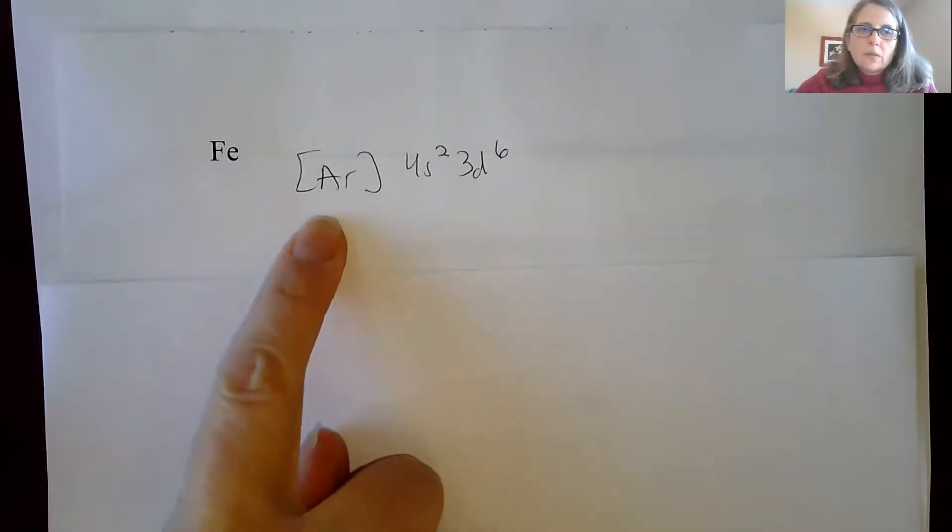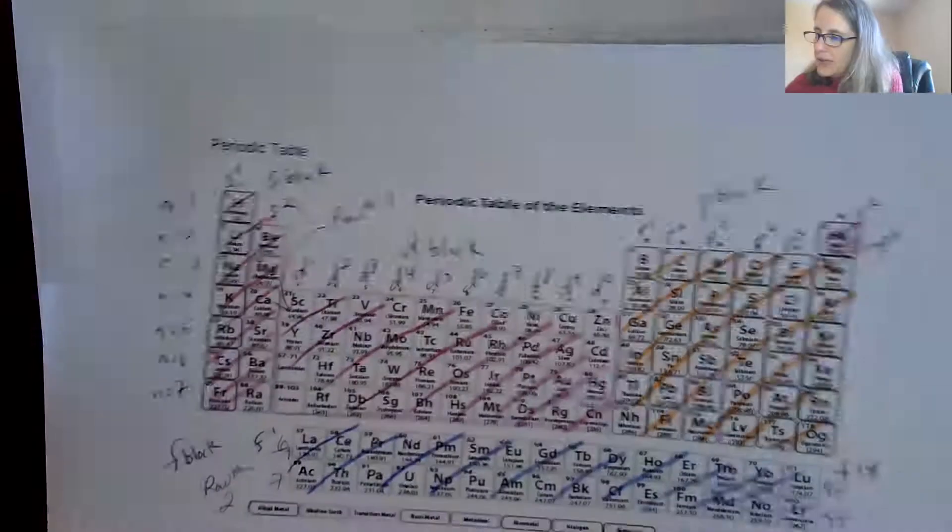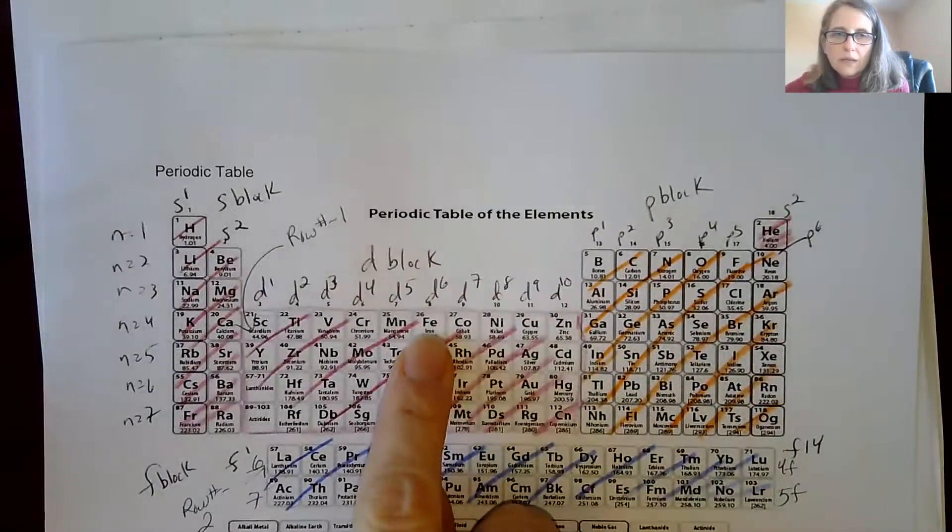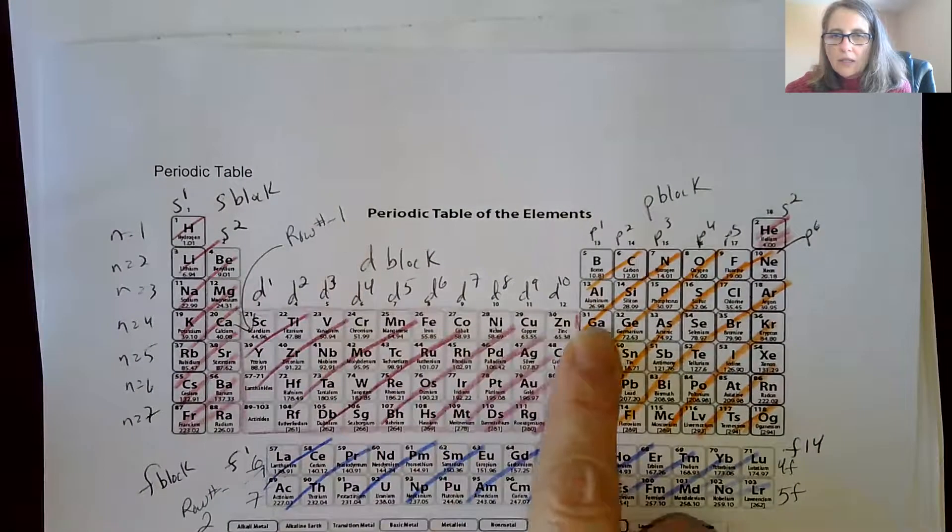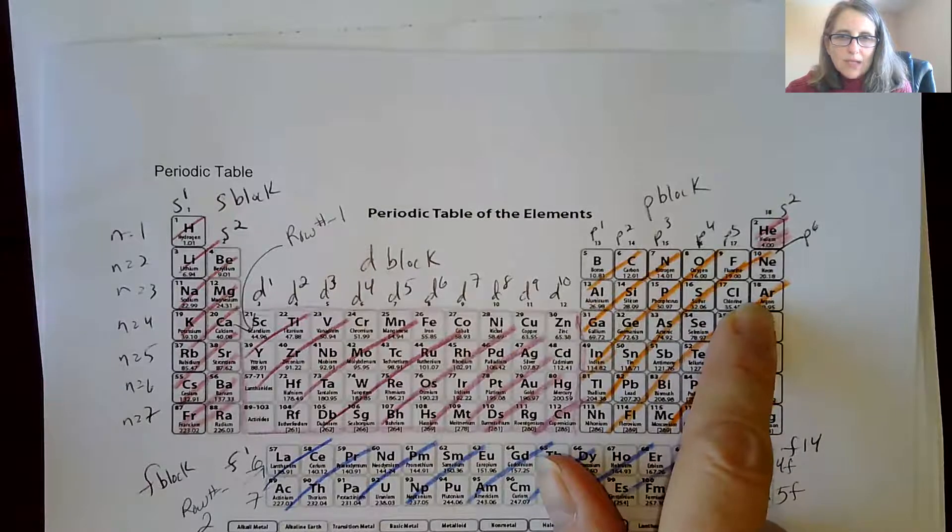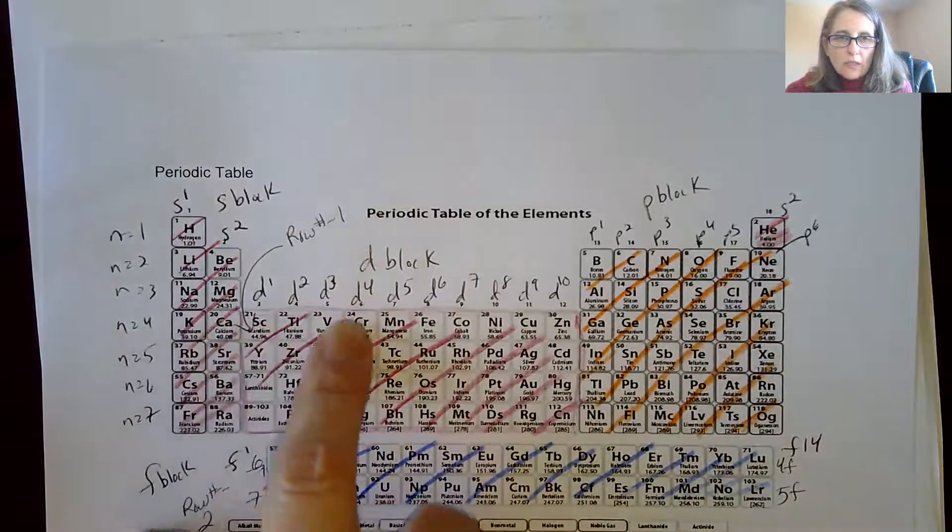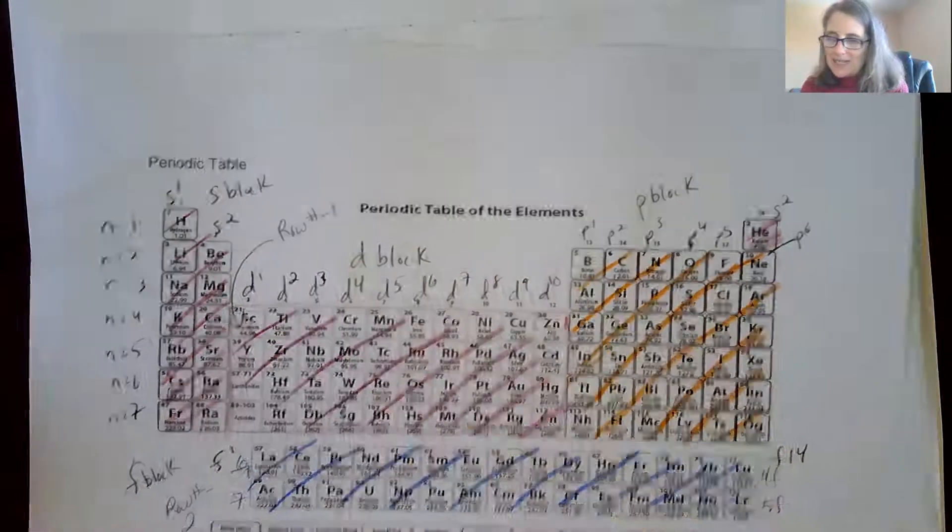So the electron configuration with noble gas for iron would be argon 4s² 3d⁶. Again, iron is in the middle of the d block. You're going to end it in, excuse me, the row above it is going to end in argon. So you always go to the row above it. That takes care of the 18 electrons. Then you do the 4s². Then you do the 3d⁶.